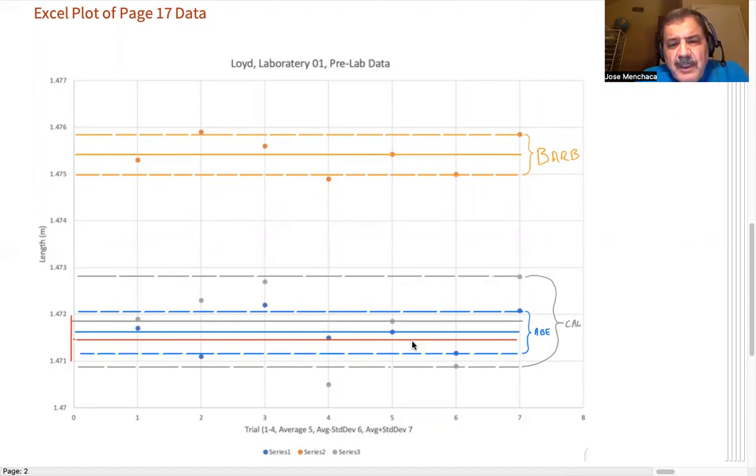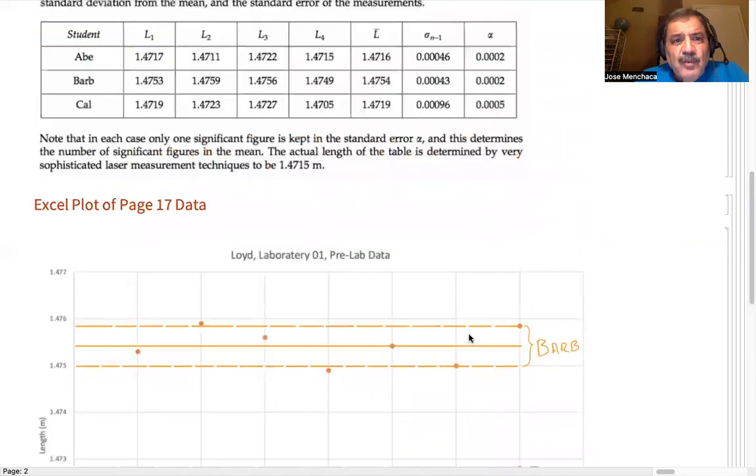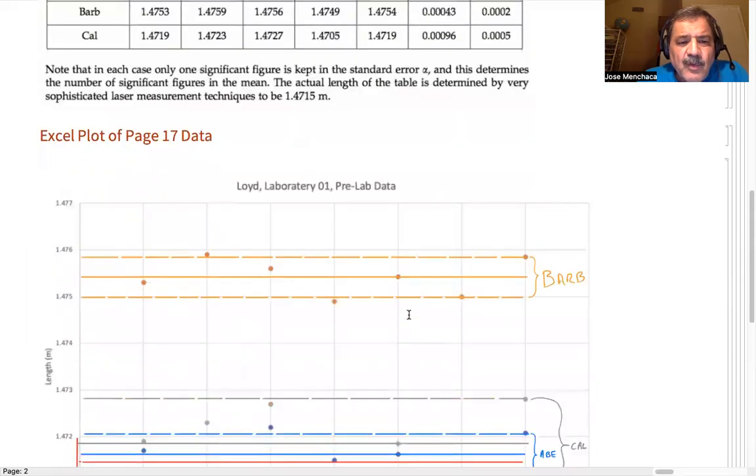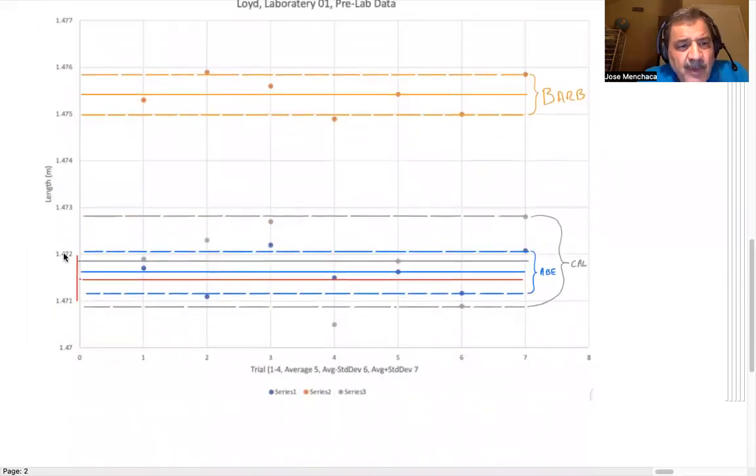And the red line here is the actual measurement as given here, the 1.4715. You can see 1.471, 1.472. So the 1.4715 is right there in between. So you see Abe got it pretty close to the actual measurement. So his data is pretty good. His standard deviation is good. His standard error was 0.0002, if I recall correctly. And so Abe looks like he's doing pretty well, got very close to the actual measurement.